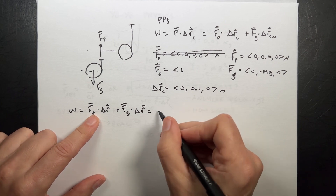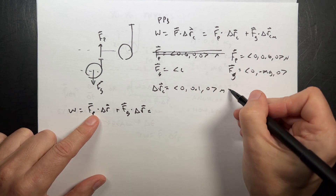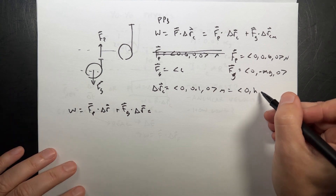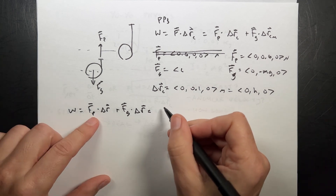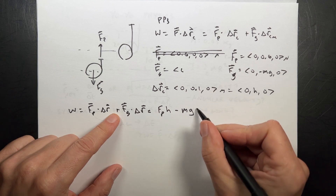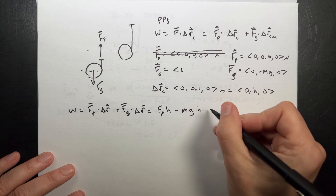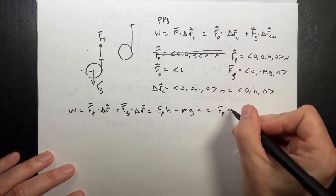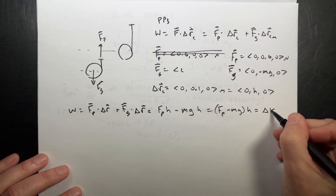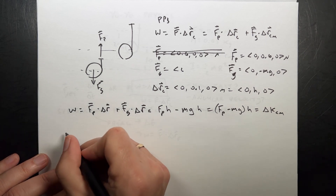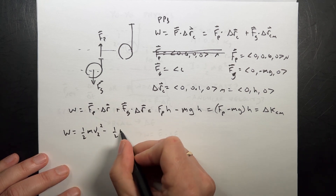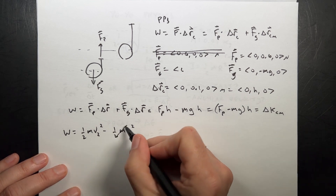So the work is going to be F_p dot delta r plus F_g dot delta r. Calling the height h, this simplifies to F_p times h minus mg times h, or equivalently (F_p minus mg) times h — the net force times h. And that equals delta K_cm. If it starts from rest, then work equals one-half m v_2 squared. Solving for v_2, I get v_2 equals the square root of 2 times (F_p minus mg) times h, all divided by m.